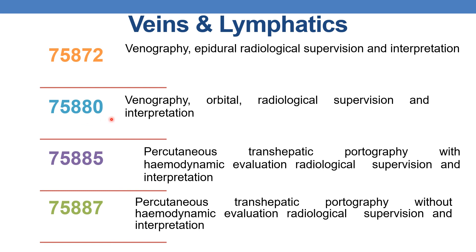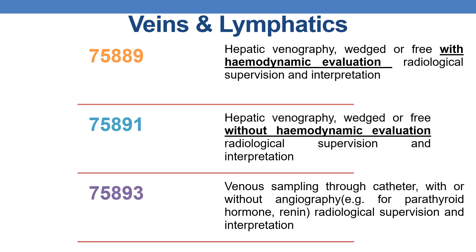CPT 75880 is venography, orbital, radiological supervision and interpretation. CPT 75885 is percutaneous transhepatic portography with hemodynamic evaluation, radiological supervision and interpretation. CPT 75887 is percutaneous transhepatic portography without hemodynamic evaluation. CPT 75889 is hepatic venography, wedged or free, with hemodynamic evaluation, radiological supervision and interpretation. CPT 75891 is hepatic venography, wedged or free, without hemodynamic evaluation. CPT 75893 is venous sampling through catheter with or without angiography — for example, parathyroid hormone or renin — radiological supervision and interpretation.